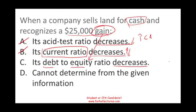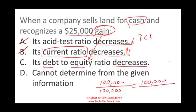When asked what happens to ratios, quickly put down some numbers. Let's assume debt was $100,000 and equity was $100,000 before this transaction. After the transaction, debt was not affected, and the $25,000 gain was added to equity, making equity $125,000. Did the debt-to-equity ratio go down? Yes — 100,000 divided by 125,000 is less than 1, whereas before it was 1. It did go down. The answer is C.